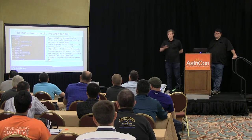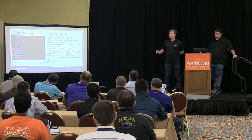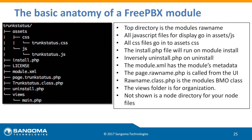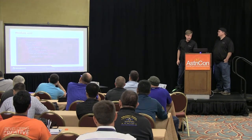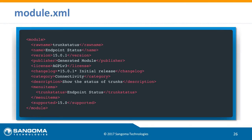Basic anatomy of a FreePBX module. They all live in the modules folder in FreePBX, and every module is named by its raw name. This is just a quick one - trunk status. We've got the assets, CSS, JavaScript, install, license, module, page.trunks.php. This is a quick overview - we have all this in our wiki. This is what the module XML looks like. FreePBX is based on XML because that was what was available in 2005 when the project started. It originally started as INI files then moved to module XML.